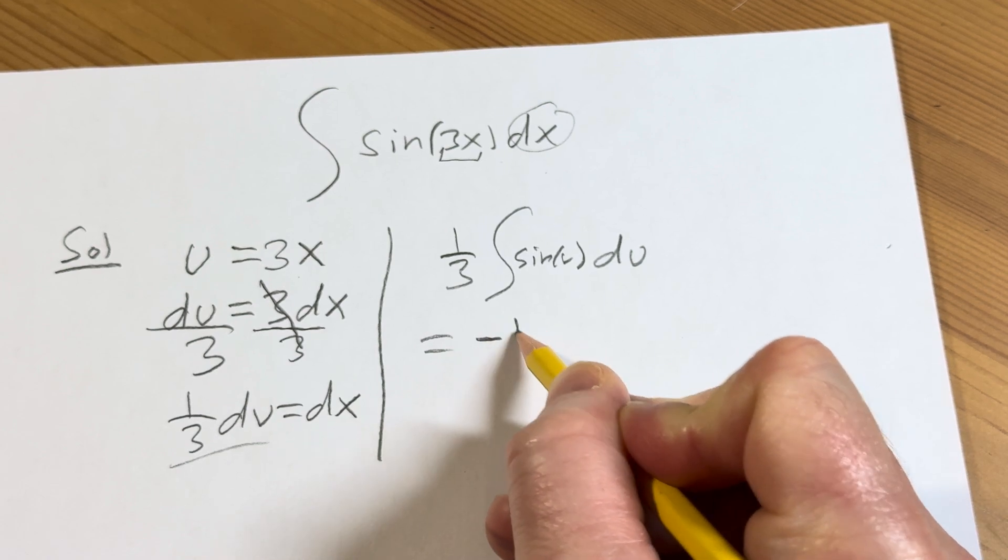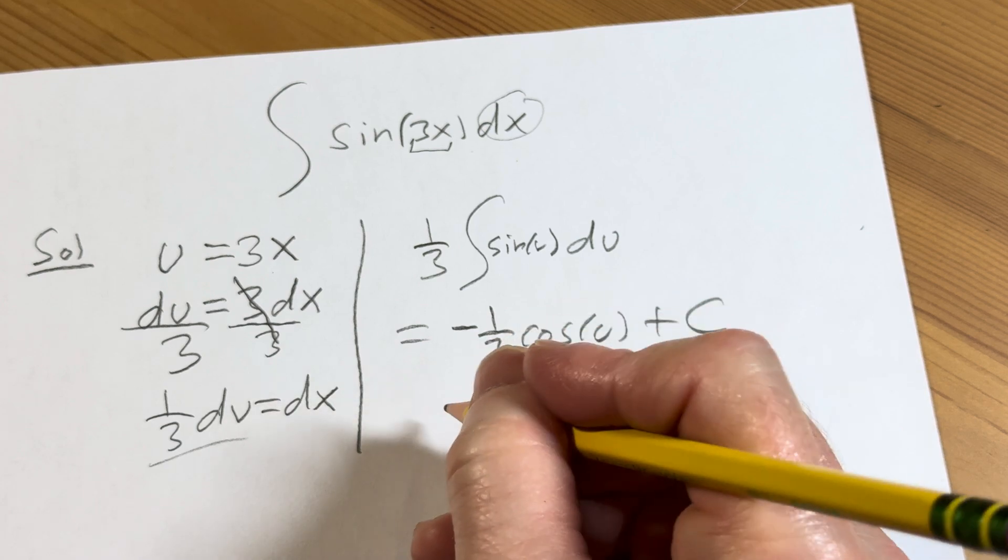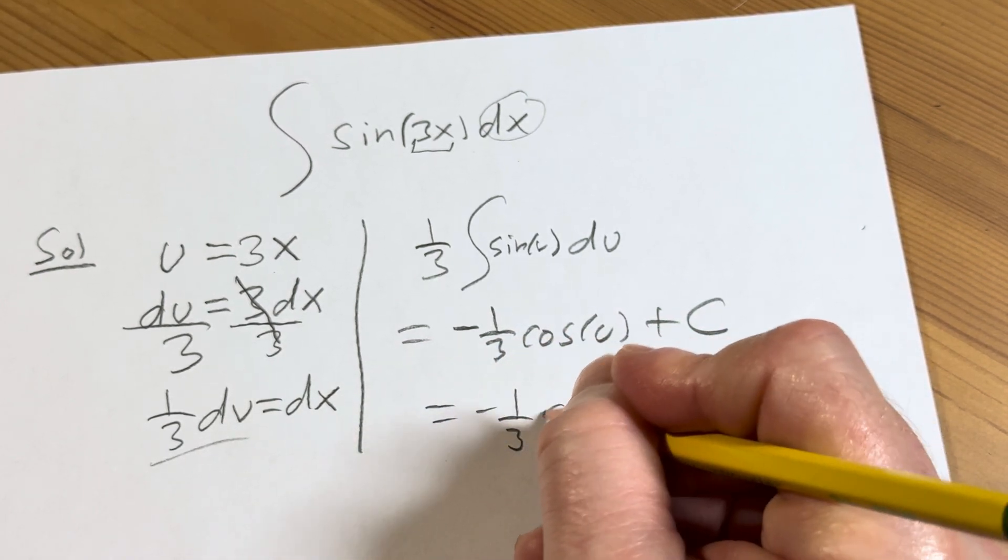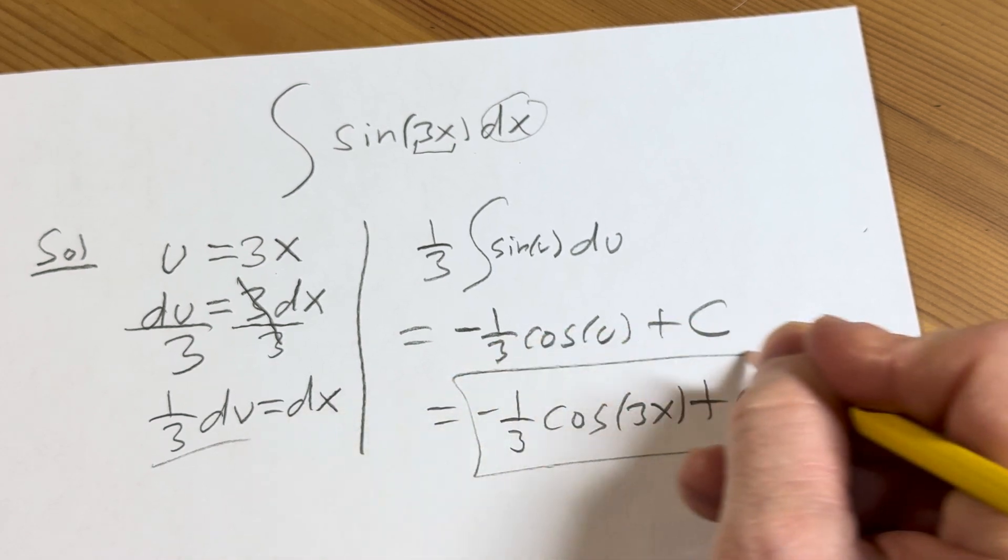So this is equal to negative 1/3 cosine of u plus our constant of integration, capital C. It's negative 1/3 cosine of 3x, because that was our u, plus C.